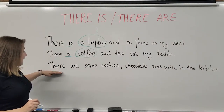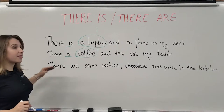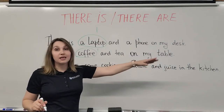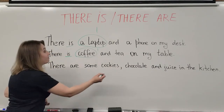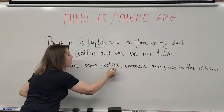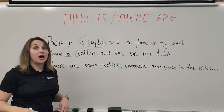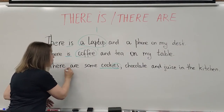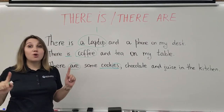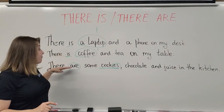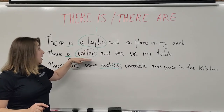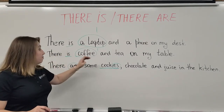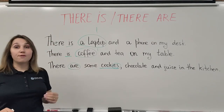Our next example: 'There are some cookies, chocolate, and juice in the kitchen.' Cookies is a plural form — not one, but many — and therefore instead of 'is,' we're going to use 'are.' So remember: if the phrase is followed by a singular noun, we use 'is,' but if it is followed by a plural noun, we use the form 'are'.